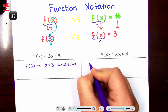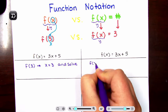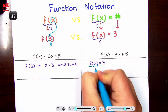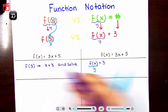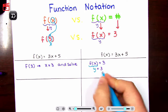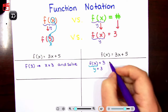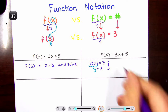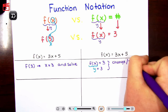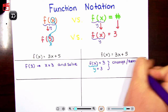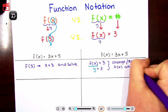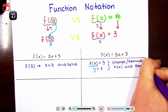When you see f of x equals 3, that means that f of x is y, and that equals 3. So this means change and remove — get rid of f of x and replace with the number.